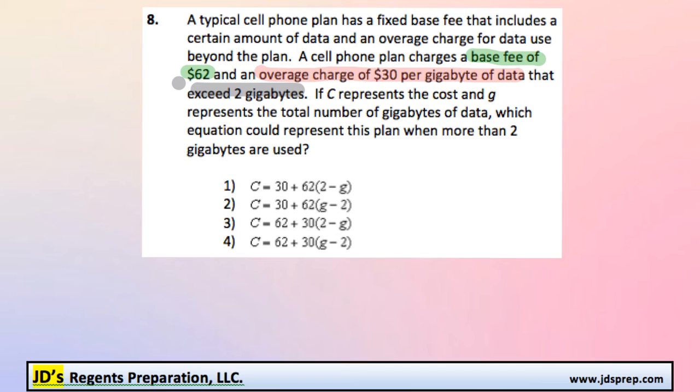So normally we're dealing with a base fee, that would be the $62, and then we would add $30 per gigabyte, which would be G, and that would be our equation normally.